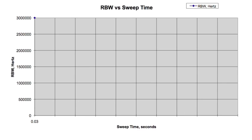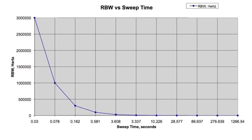There is a trade-off between sweep speed and resolution bandwidth selection. The wider the RBW, the faster the sweep.